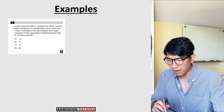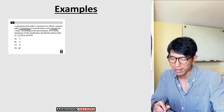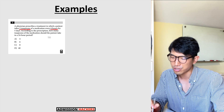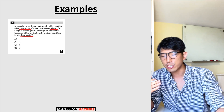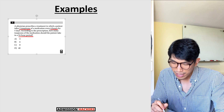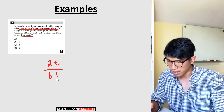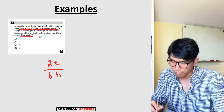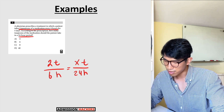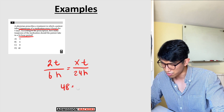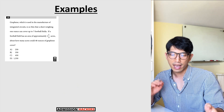Easy example: a physician prescribes a treatment in which a patient takes two teaspoons of medication every six hours for five days. How many teaspoons of medication should the patient take in a 24-hour period? We have a linear relationship: two teaspoons every six hours. Setting up the proportion: two teaspoons over six hours equals x teaspoons over 24 hours. Cross multiplying: 48 equals 6x, so x equals 8. The answer is 8 teaspoons.